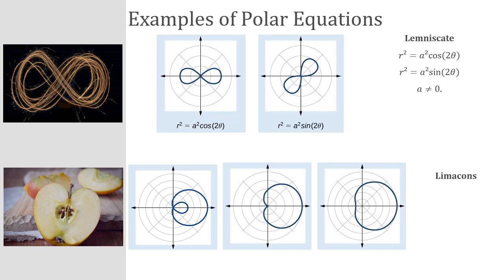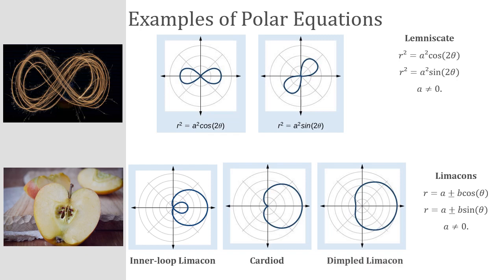Finally, we have the graph of the polar equation called a limasson. The equation for that is r equals a plus or minus b times the sine or cosine of theta, where a does not equal zero. The different types of limasson include one called an inner loop — you can see that inner loop on the inside — one called a cardioid that looks like a heart, and one called a dimpled limasson. You can see in this picture of an apple that it sort of looks like a cardioid.